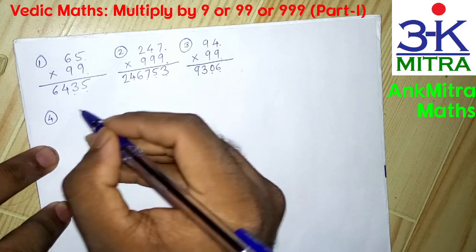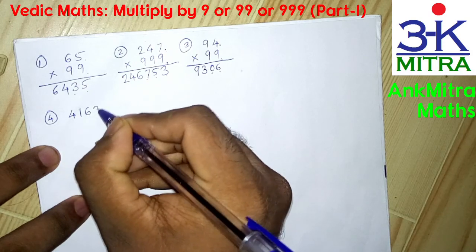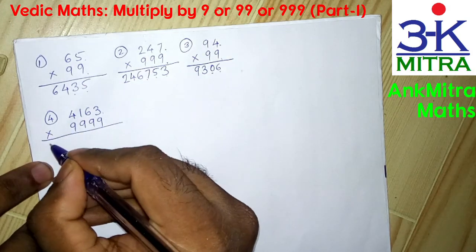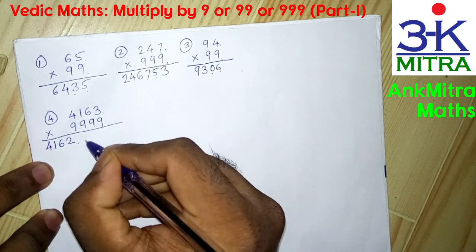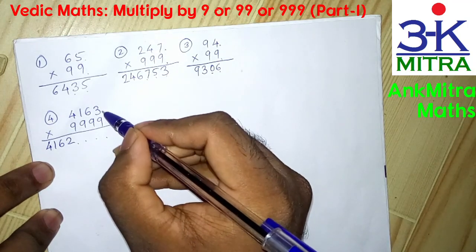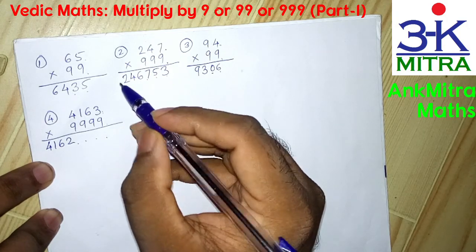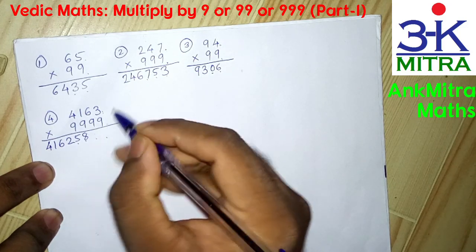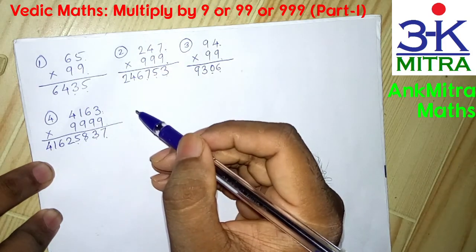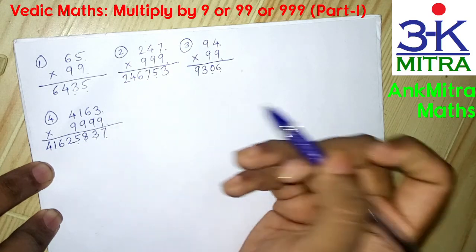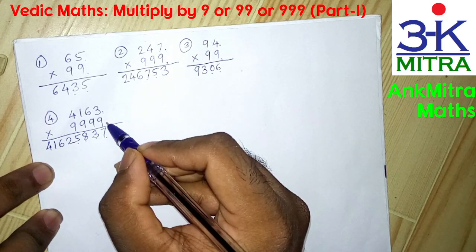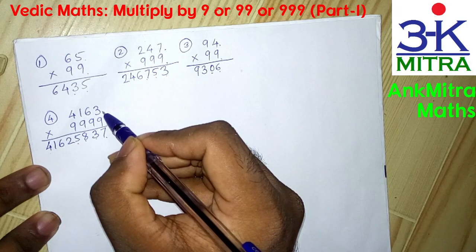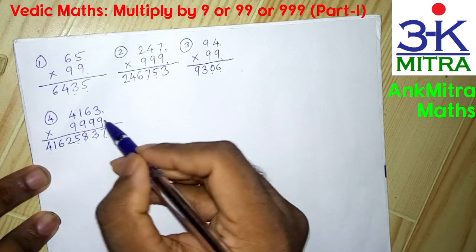Let's take a four-digit number this time: 4163 multiplied by 9999. In similar fashion, we reduce 1 from 4163 and write down 4162. Then we have 4 places to fill, so we subtract 4163 from 10,000. That gives us 5837. So the answer for 4163 multiplied by 9999 is 41625837 — 4162 came by reducing 1 from the multiplicand, and 5837 came from subtracting 4163 from 10,000.